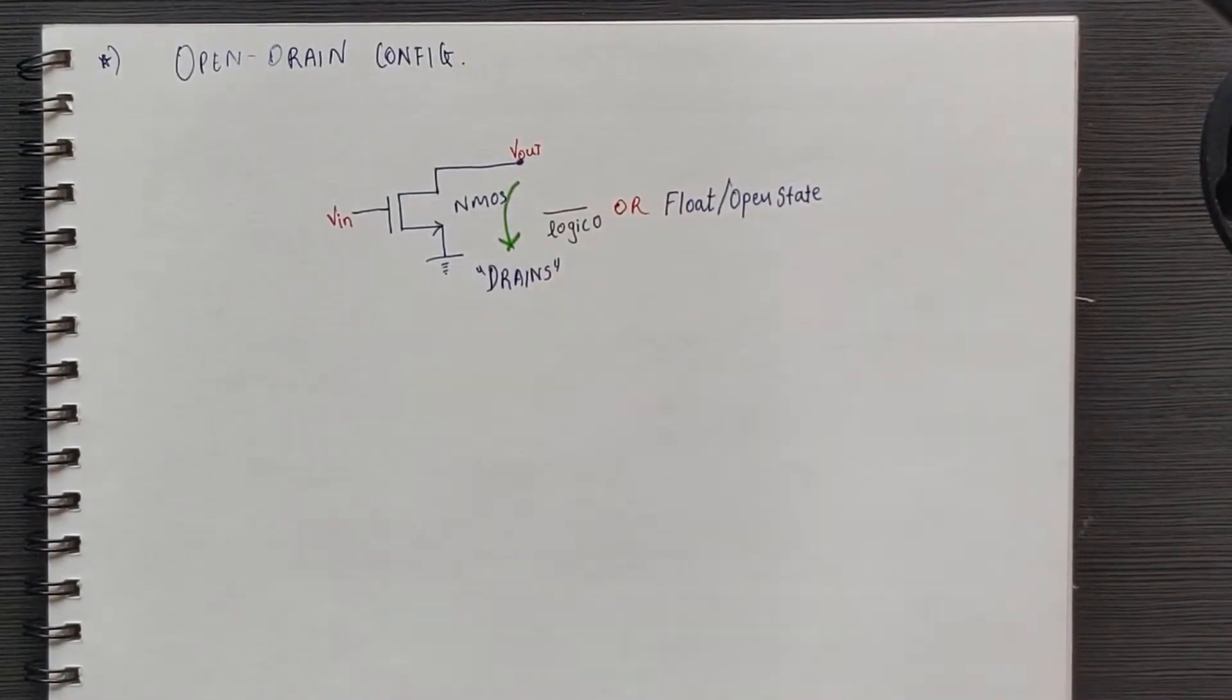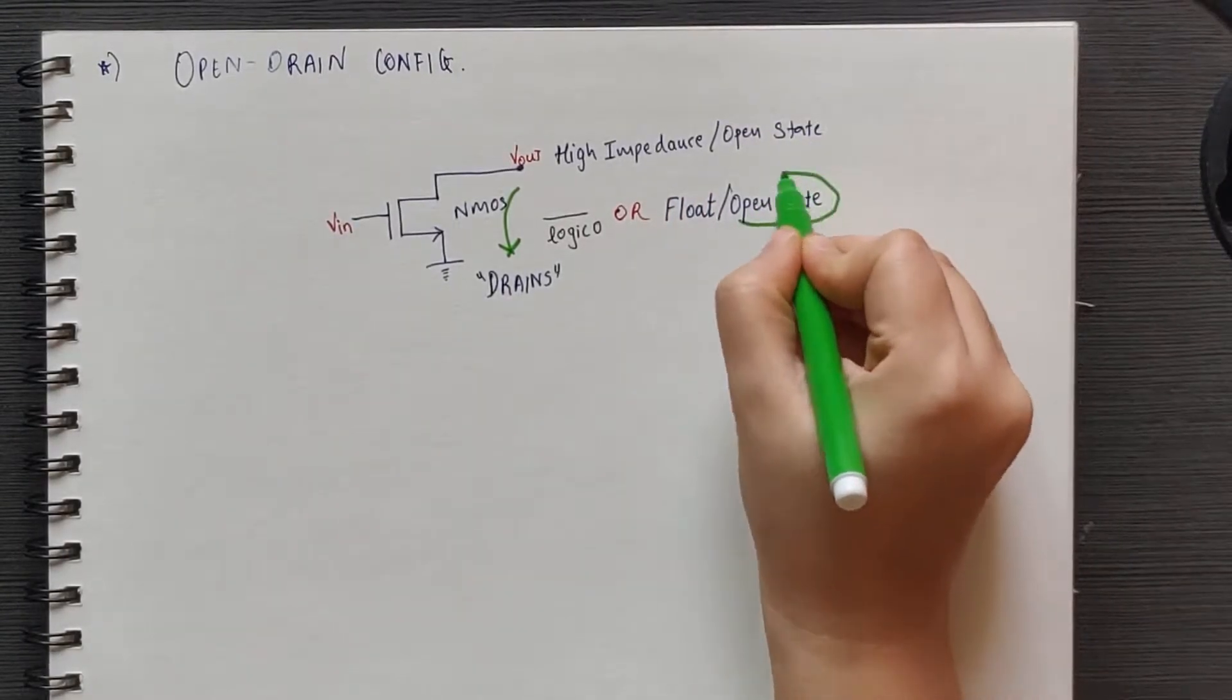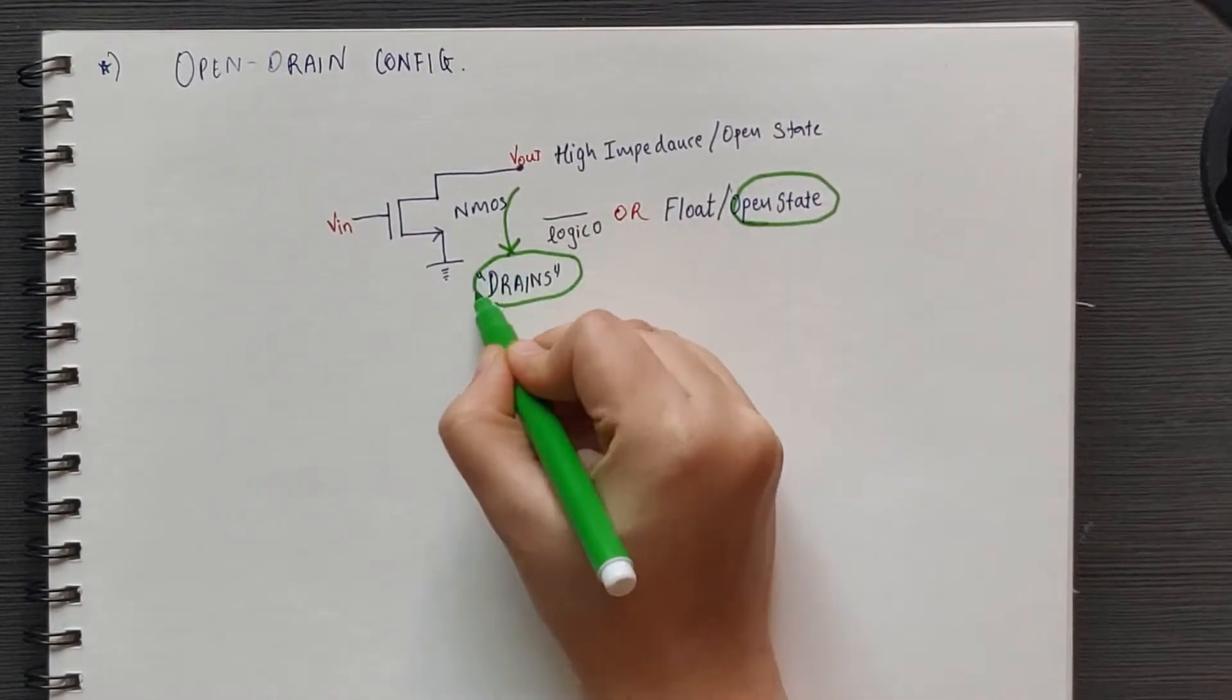Thus, it either drains the current or remains in high impedance open state. That's how we get the name open drain.